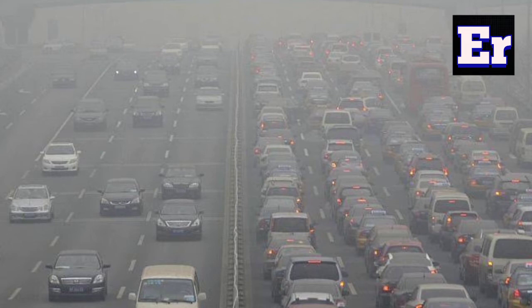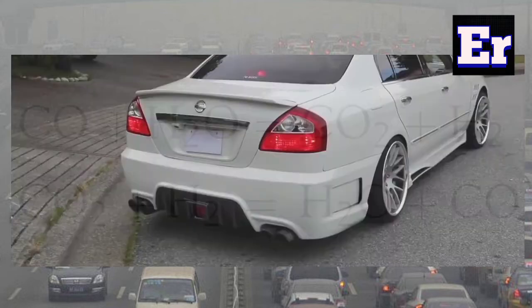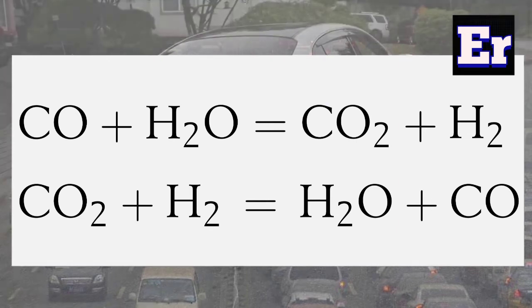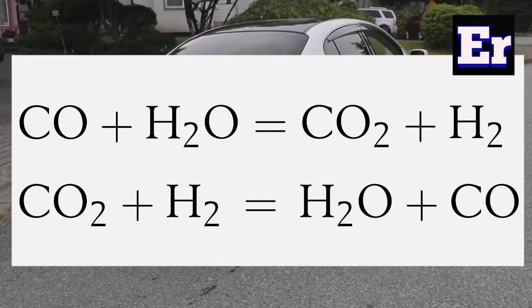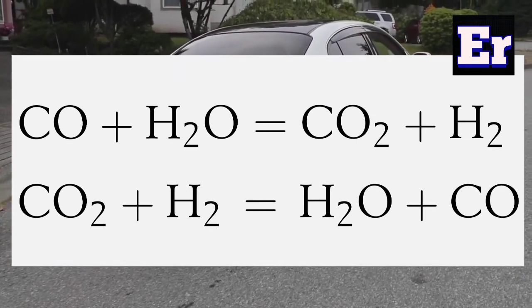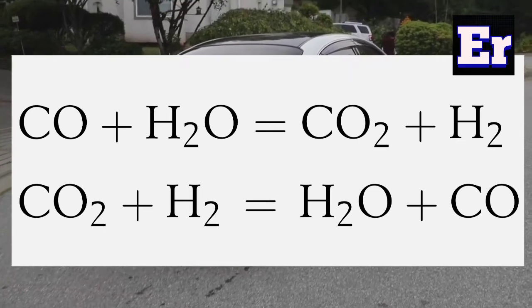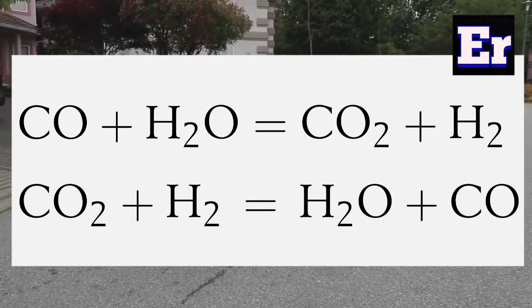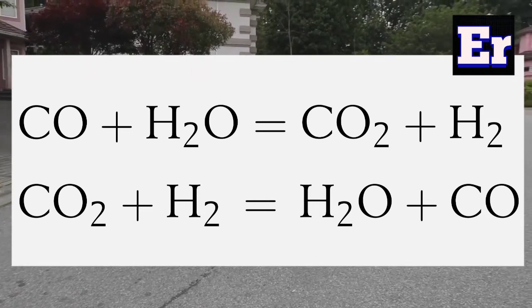The spark plug fires continuously to ignite the exhaust gas. The exhaust of a rich mixture contains unburned hydrocarbons, carbon monoxide, and free hydrogen. The high inflammability of hydrogen gas helps carry out the combustion process more easily and continuously. Hydrogen is present in the exhaust due to the water-gas shift reaction between water and carbon monoxide.